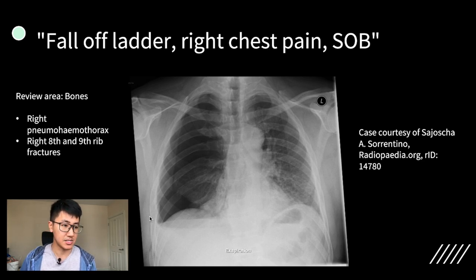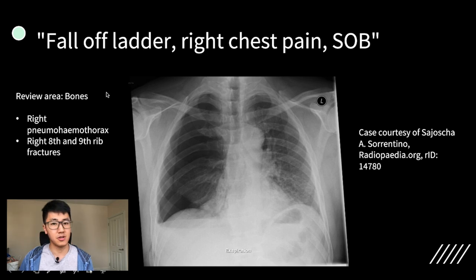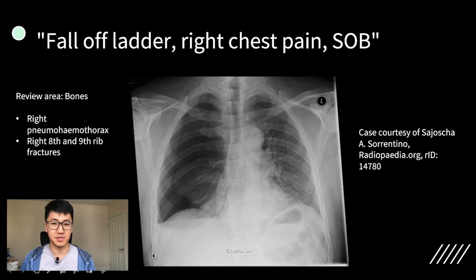The other area to make sure you look at is bones, because rib fractures can cause pneumothoraces. In this case, you can see eighth and ninth rib fractures. As you're following them along, you can see that the cortex of the bone is not in continuity. Also, if you correlate it with the clinical history, they've probably fallen off a ladder, broken some ribs, and those have caused the pneumohemothorax.